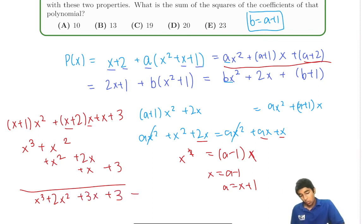So x cubed plus x squared plus x squared plus 2x plus 2x plus 3x plus 3. This is our polynomial. We have 1 squared plus 2 squared plus 3 squared plus 3 squared is 9 plus 9 plus 4 plus 1. That is 23. Our answer for this problem.